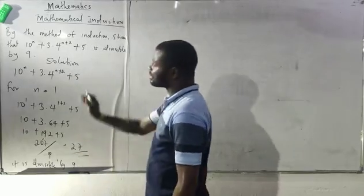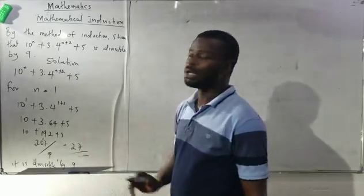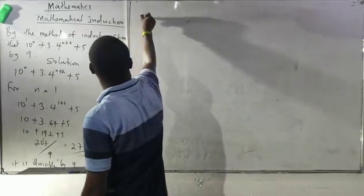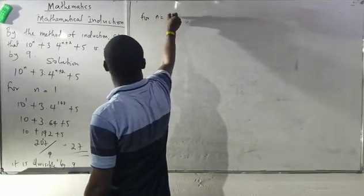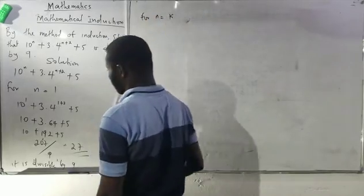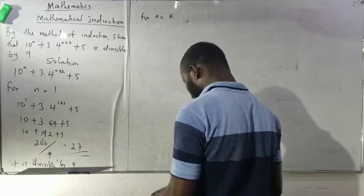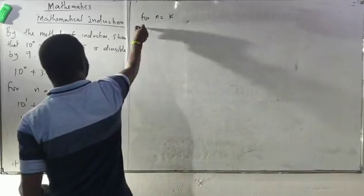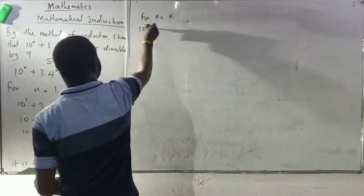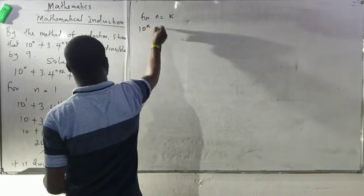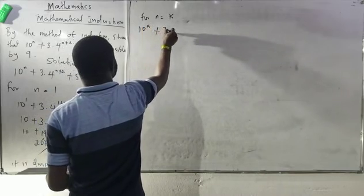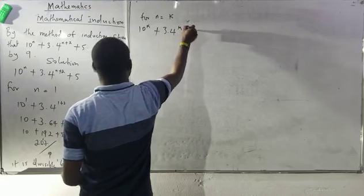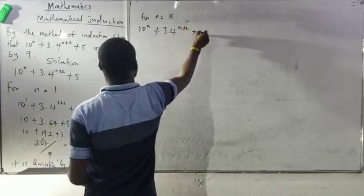Since it is true for n equals 1, let's try for n equals k. For n equals k, I will be having 10 raised to the power k plus 3 dot 4 raised to the power k plus 2 plus 5.